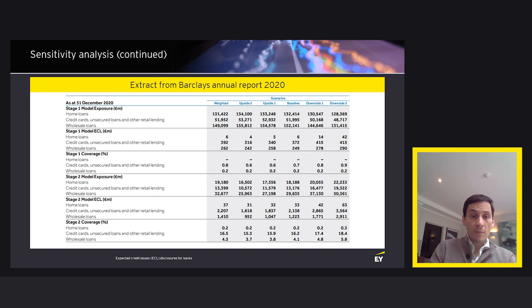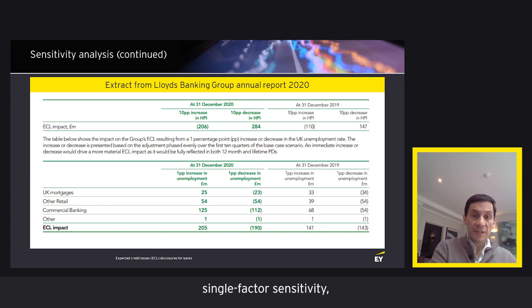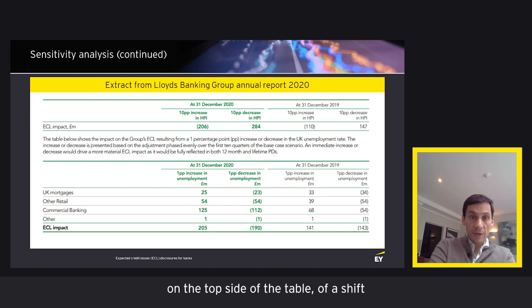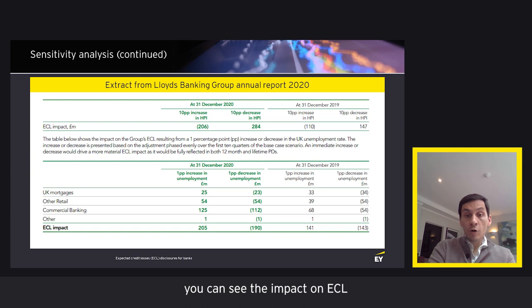The next example, to show a single-factor sensitivity, is taken from Lloyd's Banking Group. This is a good illustration of single-factor analysis, showing the effects on ECL of a shift in the house prices index — relevant for collateral values on mortgage portfolios. In the bottom half, you can see the impact on ECL of shifting the unemployment rate, shown separately by mortgages, retail, commercial, and other lending exposures.